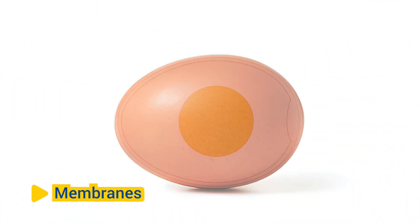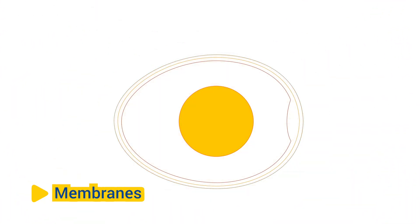Membranes. Beneath the shell, there are two membranes, the outer shell membrane and the inner shell membrane. These membranes help retain moisture and protect the embryo from dehydration and contamination. The inner shell membrane adheres closely to the eggshell, while the outer shell membrane is more loosely attached.